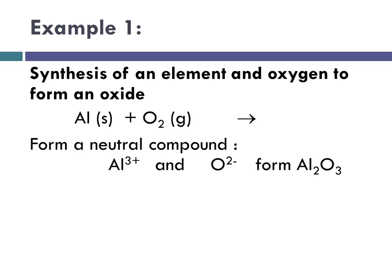And remember, nonmetal charges are group number minus 8. So 6 minus 8 is negative 2. And then when we use the criss-cross method, we will get Al2O3.